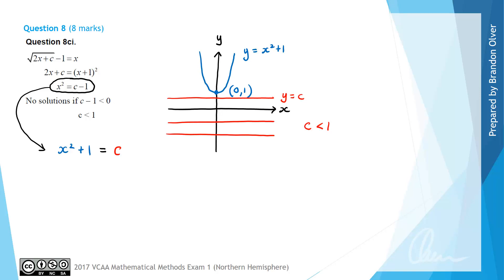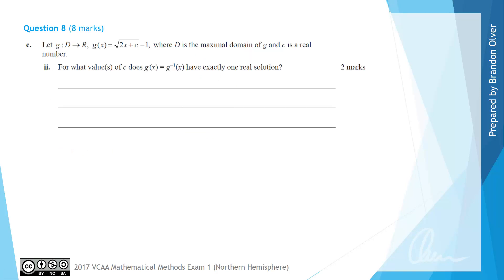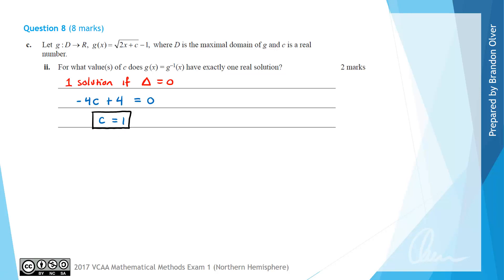For part c(ii), we're asked for what values of c does g and g⁻¹ have exactly one real solution. Using the discriminant, there is one solution when the discriminant equals zero. From the previous expression, the discriminant was minus 4c plus 4. Setting that equal to zero gives c equals 1. However, there is more to this answer than just c equals 1.